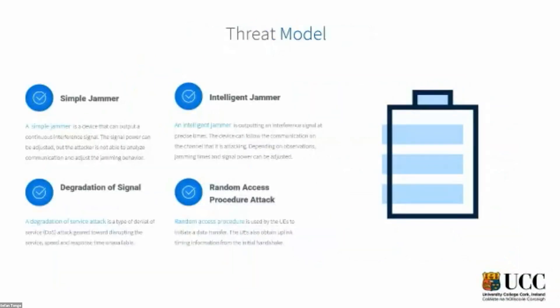In our simulation and research, we created a FRAT model and used two jammers: a simple jammer that basically just emits white noise in order to degrade the signal, and an intelligent jammer that knows the network and knows how to communicate with it. The intelligent jammer times when to jam and when not to jam in order to preserve its own battery but also maximize the impact on the NB-IoT device.